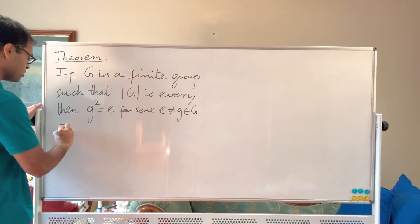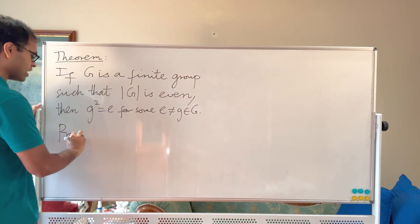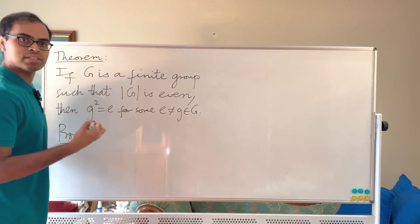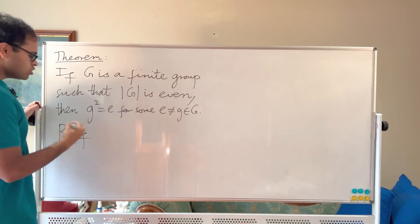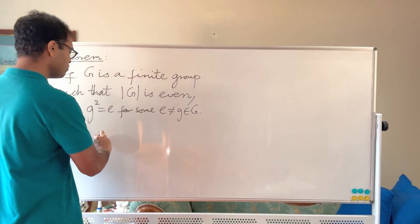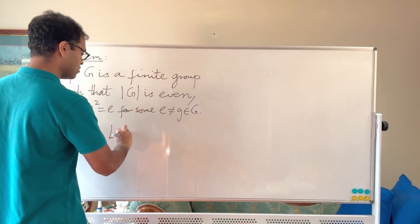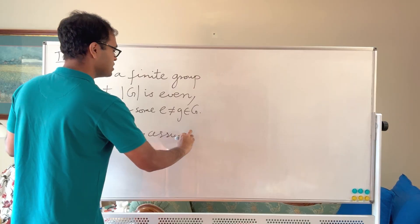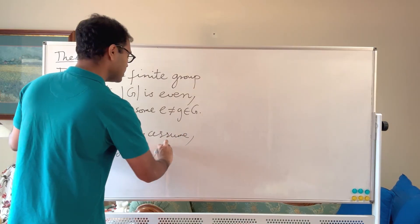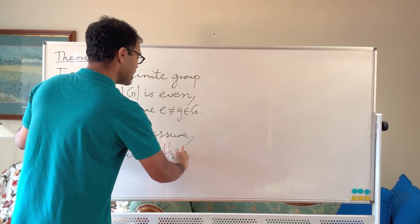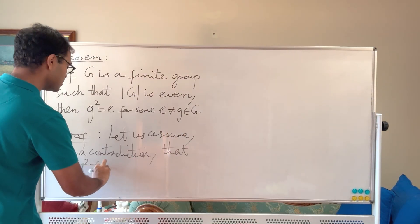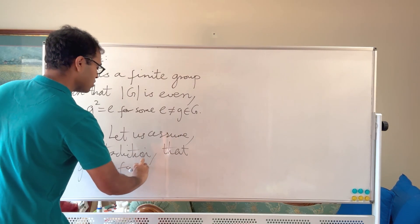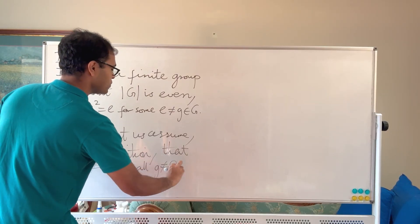So of course the identity squared is always the identity, but we are saying there is a non-identity element G with square equal to the identity. We're going to construct such a G just knowing that the number of elements is even. It's a really beautiful proof — let's dive in. We'll assume for a contradiction that the statement is false: that G squared is not equal to the identity for all G not equal to the identity.